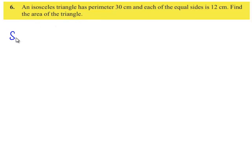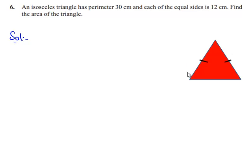So let us move on to the solution. Let us take an isosceles triangle. Let its sides be A, B and C.